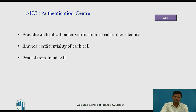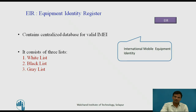AUC – Authentication Center: The function of this component is to provide authentication for verification of the subscriber identity, ensure confidentiality of each call, and protect against fraud. EIR – Equipment Identity Register: The EIR decides whether a given mobile equipment may be allowed onto the network. Each mobile equipment has a number known as the International Mobile Equipment Identity (IMEI). Dependent upon the information held in the EIR, the mobile may be allocated one of three states: allowed onto the network, barred access, or monitored.